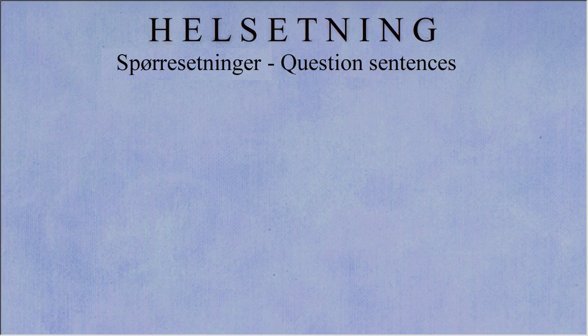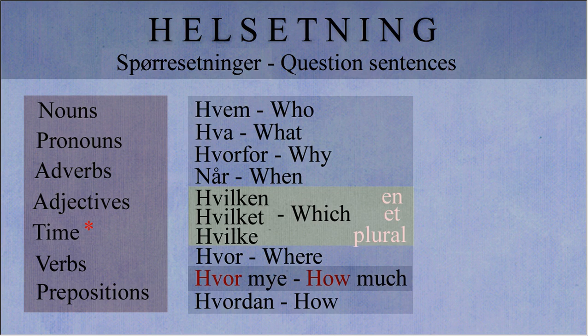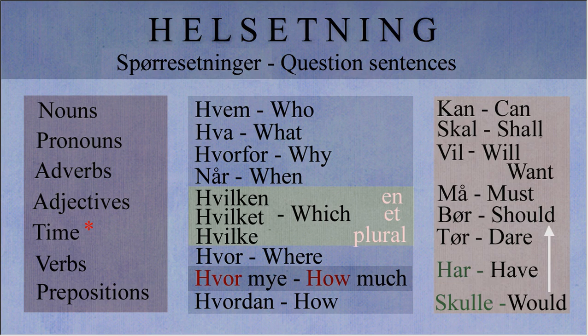Spørresetninger are responsible for a lot of confusion, just because there are so many variations on how to put them together. It all comes down to how you begin the sentence. You can begin them with just about anything — everything you would begin a normal helsetning with. You can also use question words; I've listed these all out in one place for you. Or you can use helper words.